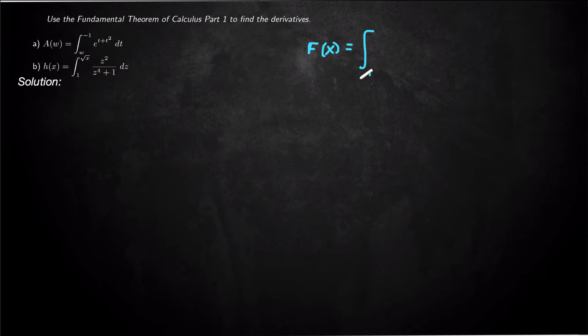So if you have an integral from some constant c to x and some function you're integrating f of t with respect to t, then what is that derivative? That's what the fundamental theorem of calculus part 1 is going to tell us, how to find a derivative of this integral type function.